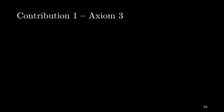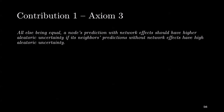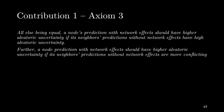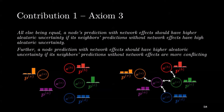Finally, our third axiom describes the desired behavior for aleatoric uncertainty with network effects. It says: all else being equal, a node prediction with network effects should have higher aleatoric uncertainty if its neighbors' predictions without network effects have higher aleatoric uncertainty. For example, on the diagram below, the prediction of the green node becomes more aleatorically uncertain since all its neighbors are aleatorically uncertain and have conflicting predictions.